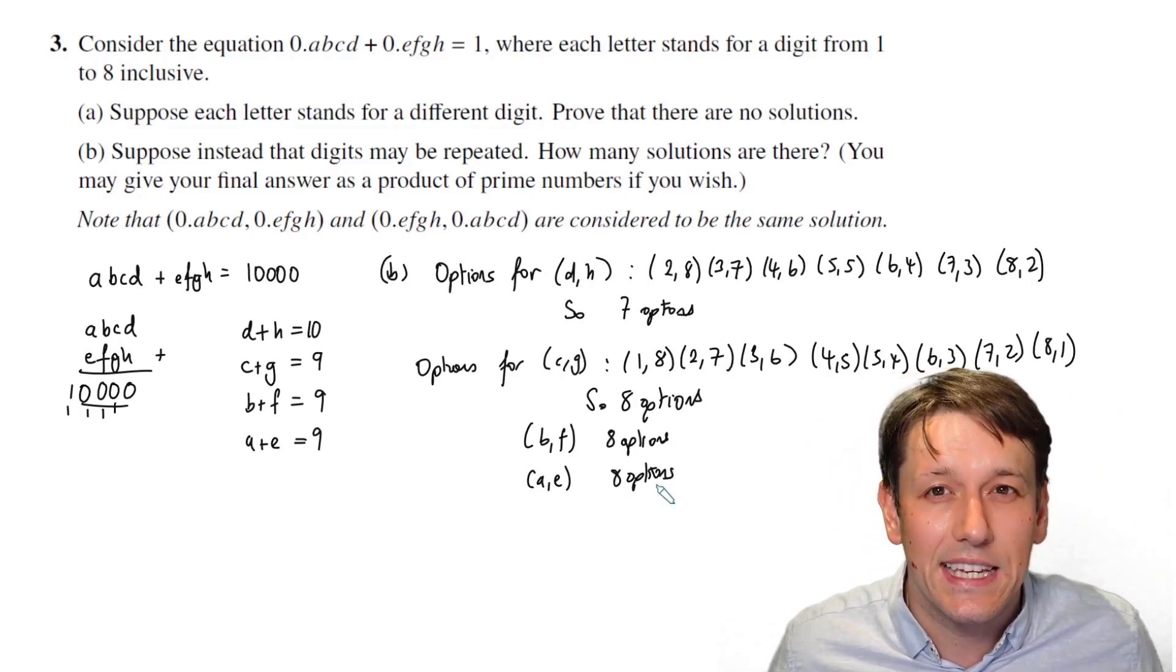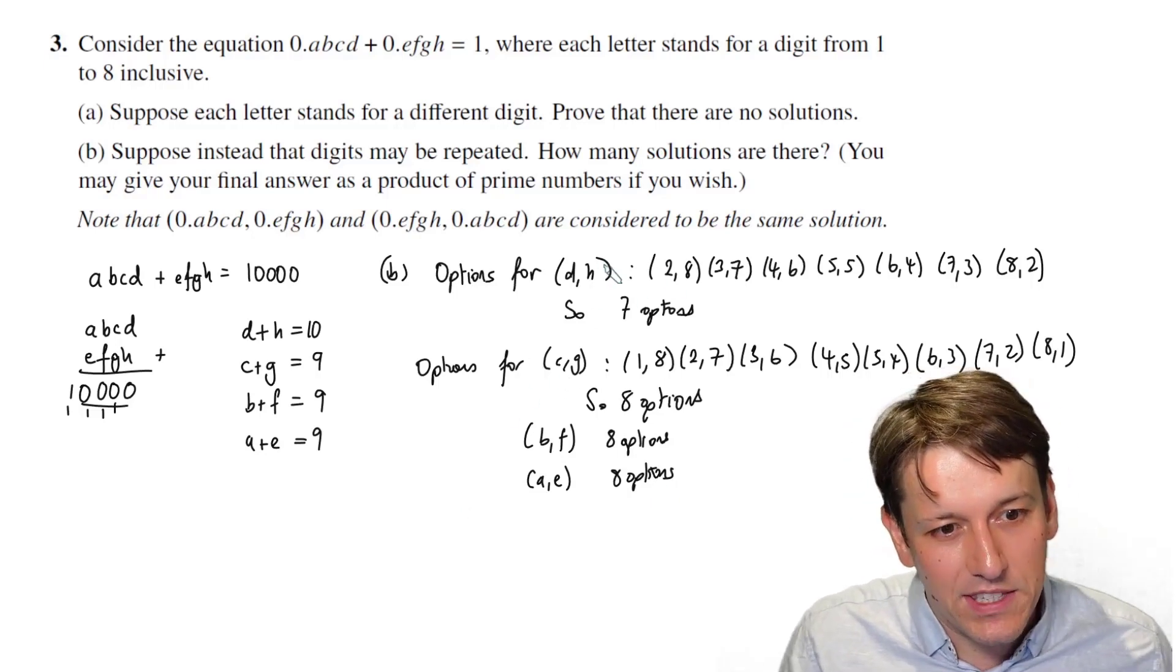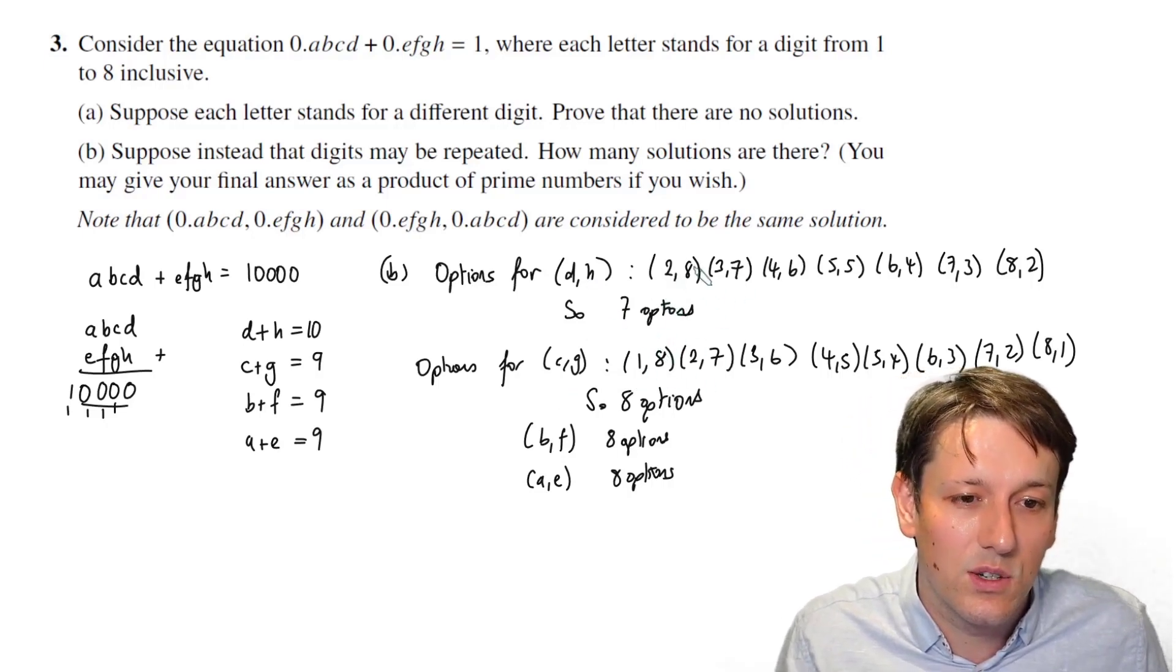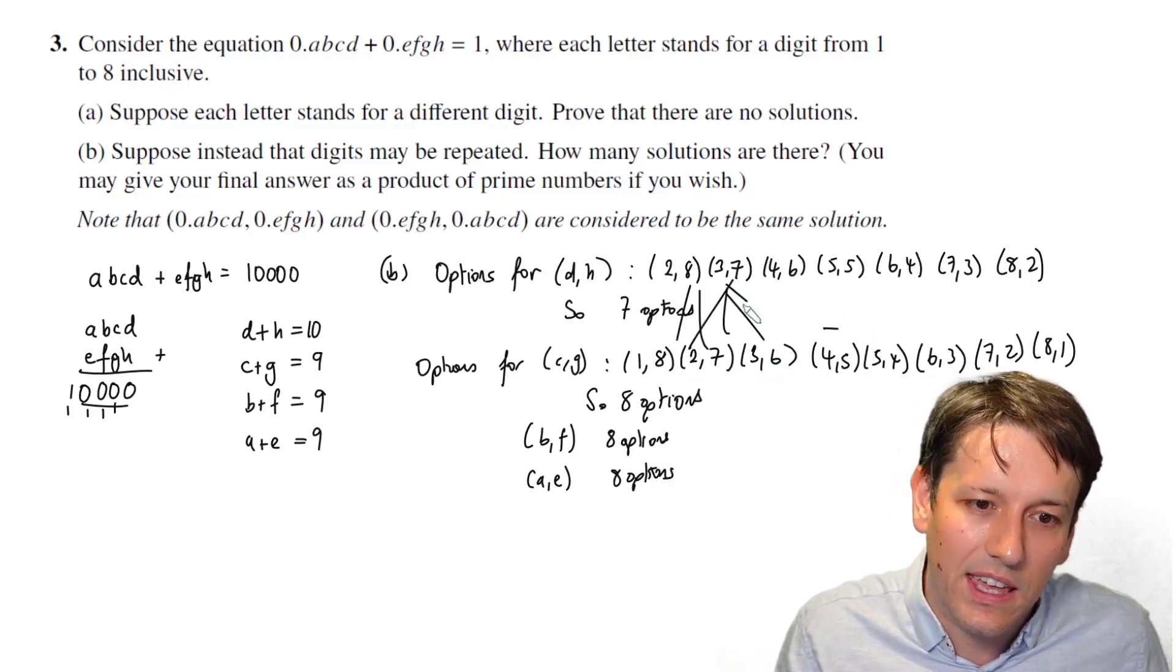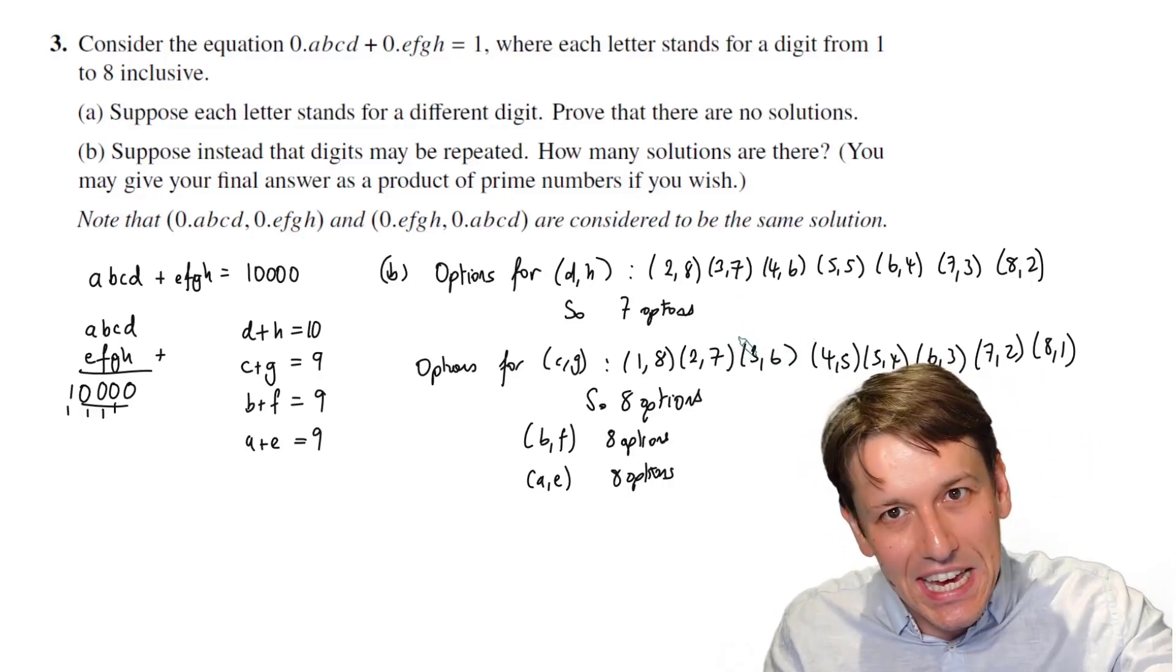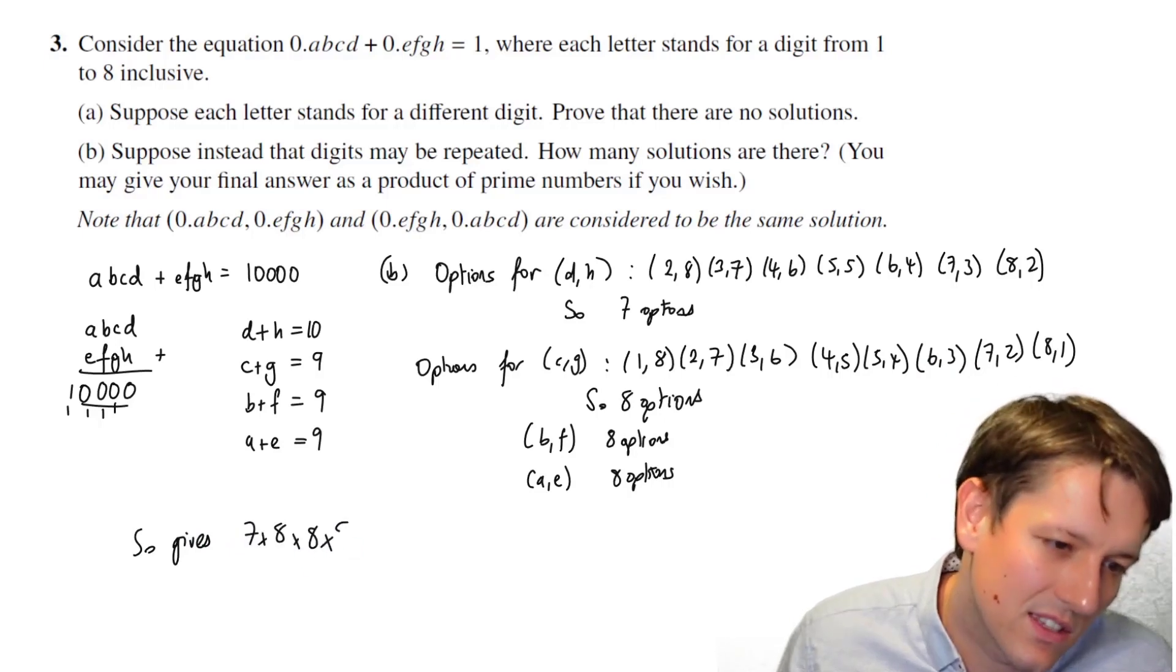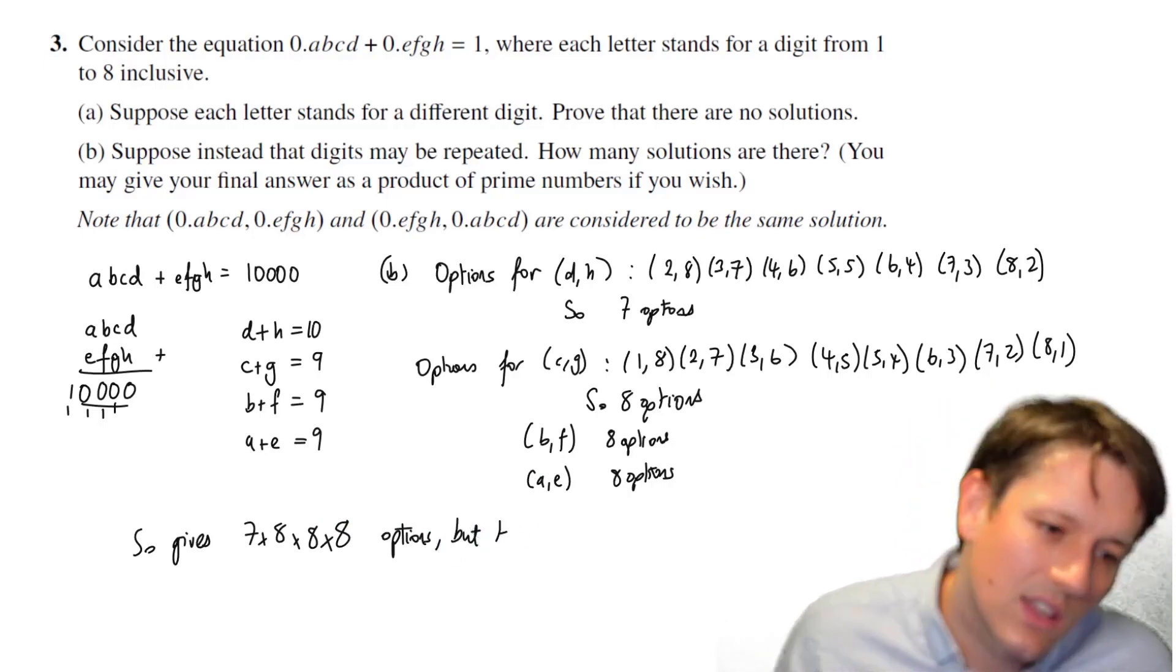So now, with combinatorial problems like this, if I want to say how many options are there in total for all the choices, I multiply them together. If you think about it, for each option I've got here for D and H, I can choose any of these options. So there's going to be, just choosing D, H, C, and G, there's going to be 56 choices here because I can do 2 and 8 with 1 and 8, 2 and 8 with 2 and 7, 2 and 8 with 3 and 6. I'll get 8 from that one and I'll get 8 coming out of this one, 8 coming out of this one, and so on. So 7 times 8, and then for each of those, I've got 8 ways of choosing B and F, and for each of those totals, I've got 8 ways of choosing A and E. So this gives 7 times 8 times 8 times 8 options.